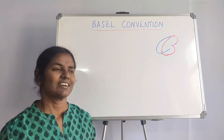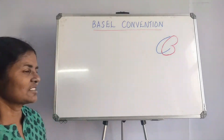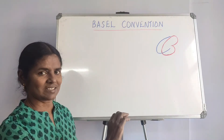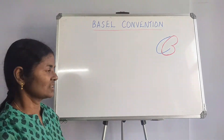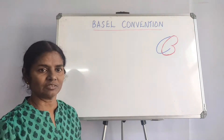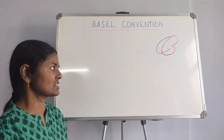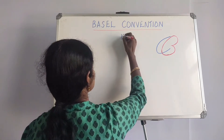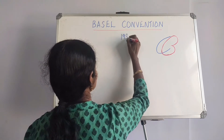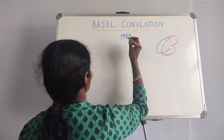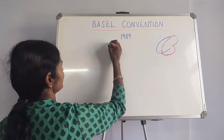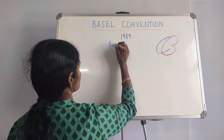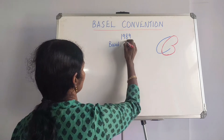Hi everyone. Coming to the last part of waste disposal or waste treatment, we come to an important convention called the Basel Convention, which was done in 1989. It was drafted and came into effect, and it was done in a place called Basel in Switzerland.